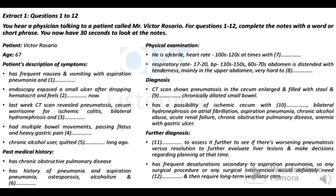Yesterday I had multiple bowel movements, passing flatus, and had epigastric pain. What's your age? 67, doctor. Do you smoke or drink? I have a chronic alcohol use but I've stopped smoking long ago. Tell me your past medical history. I have chronic obstructive pulmonary disease, history of pneumonia and aspiration pneumonia, osteoporosis, alcoholism, and microcytic anemia.